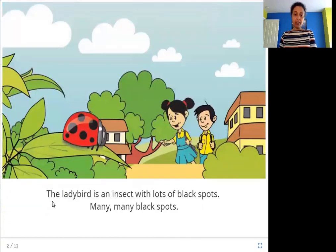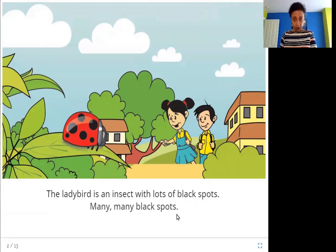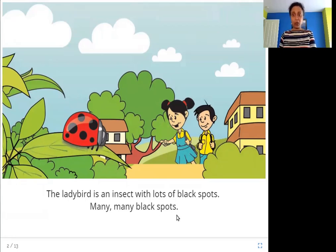The lady bird is an insect with lots of black spots — many, many black spots. So in this picture, where is the lady bird? It has lots of black spots. Here it is.